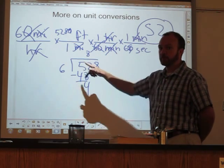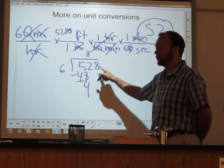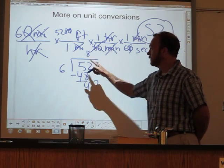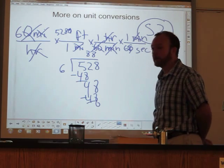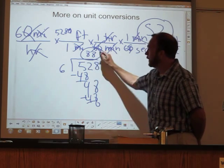6 goes into 52 8 times. 8 times 6 is 48. 52 minus 48 is 4. Bring down the 8. 8 times 6 is 48. No remainder. We're all good. Here's our answer.